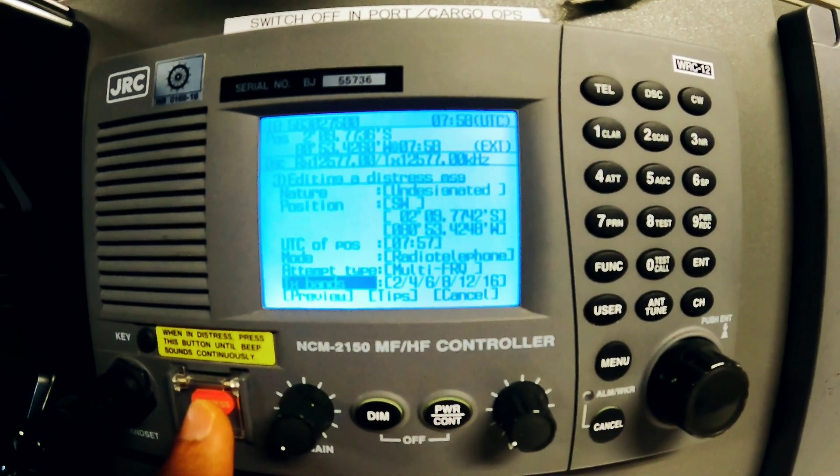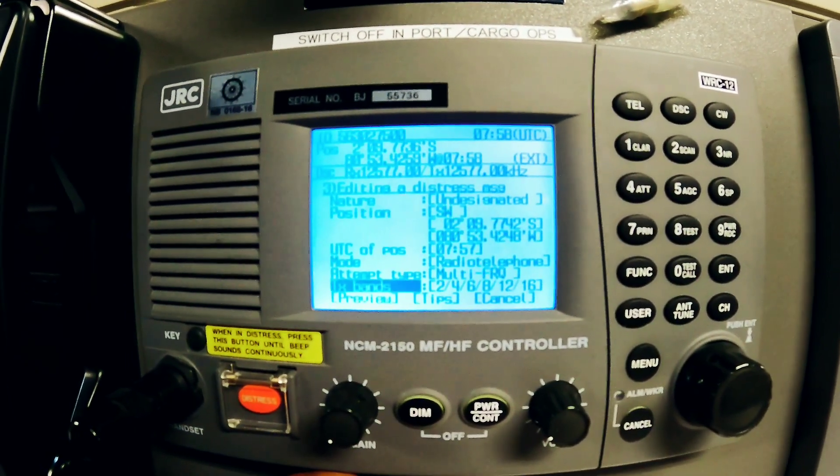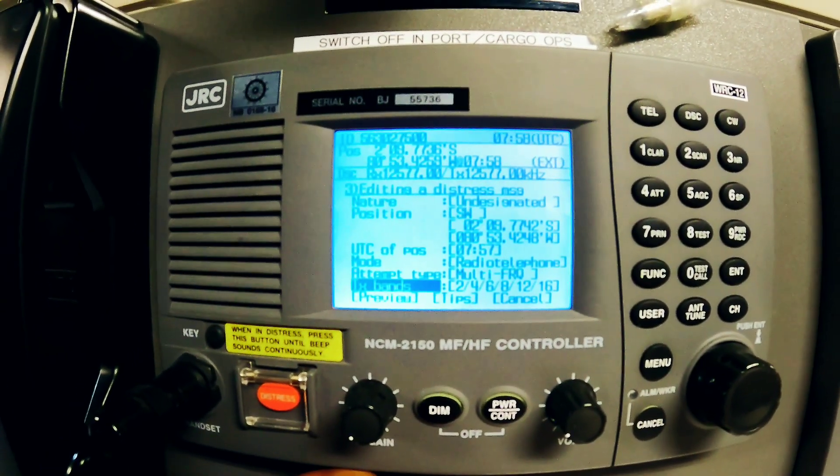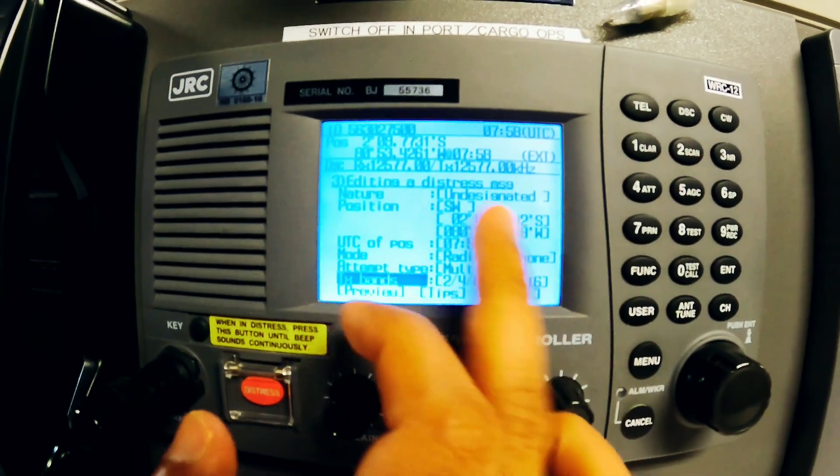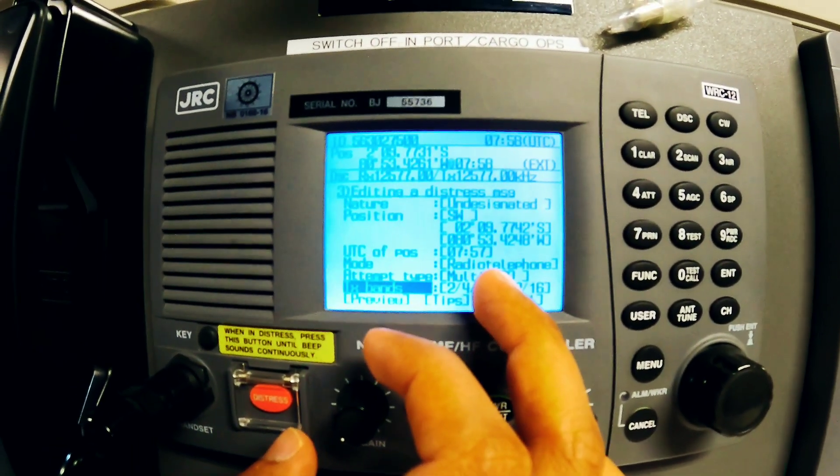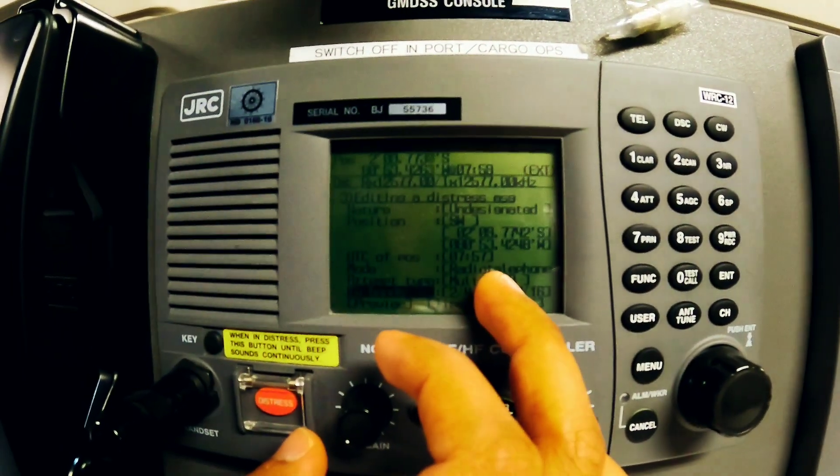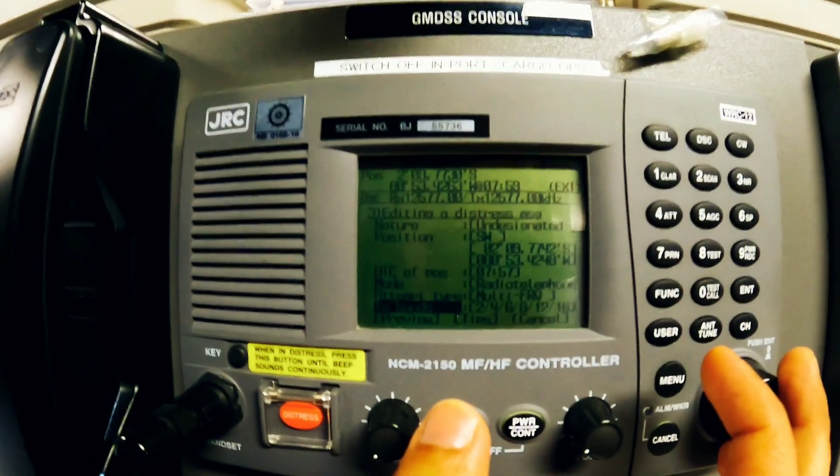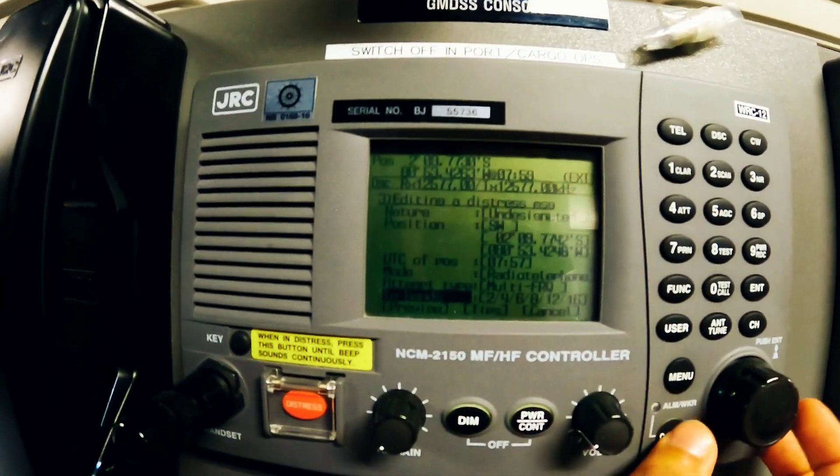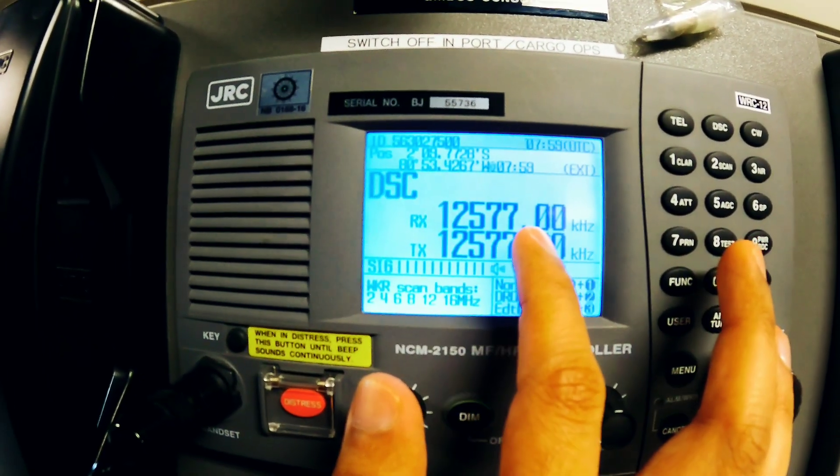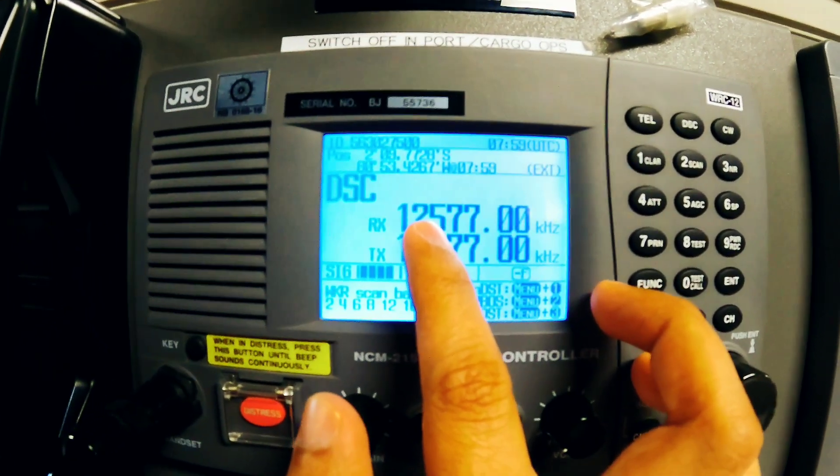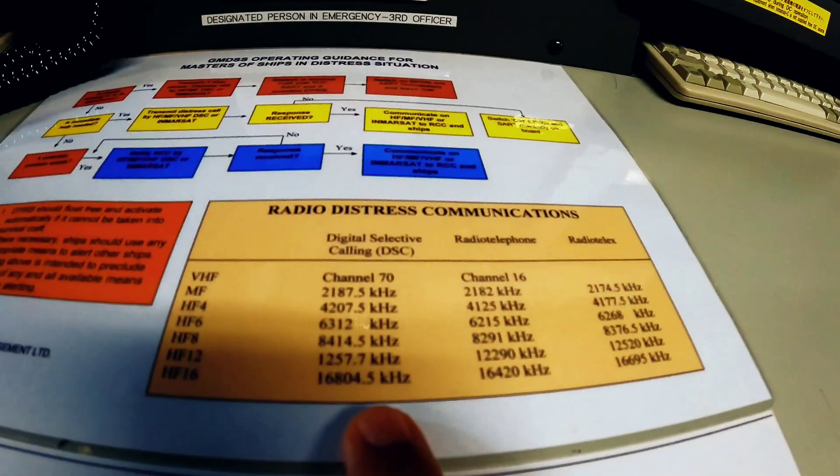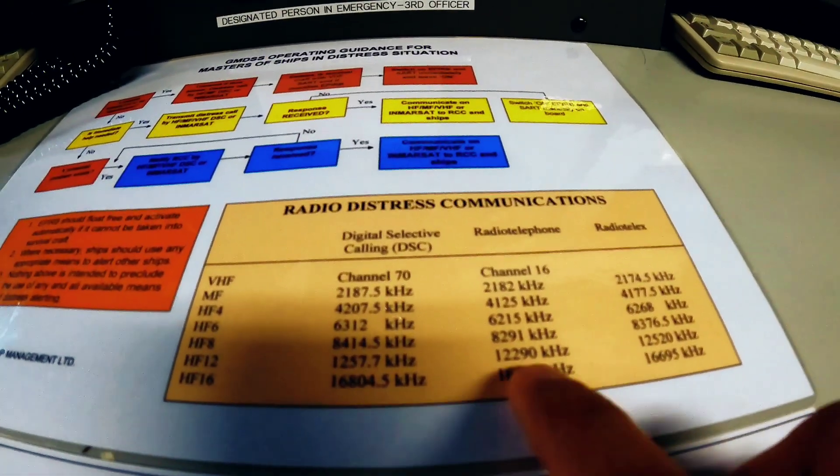The acknowledgement is the same. If some coast station or a nearby vessel has acknowledged, you will receive a loud sound in this equipment and in the message you will see that your distress message has been acknowledged. At that time, what the other vessel will do is they will put the MFHF equipment on the radio telephone mode. Let's say if he has acknowledged on a frequency of 12577, this is a DSC frequency, so he will switch to RT mode of this number 12 frequency, which is the RT frequency of 12, which is 12290 kilohertz.